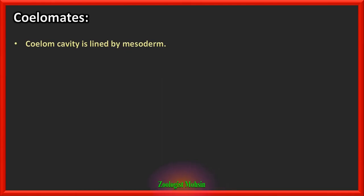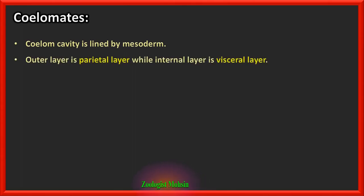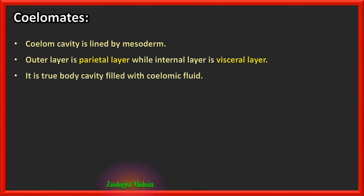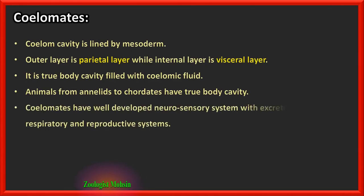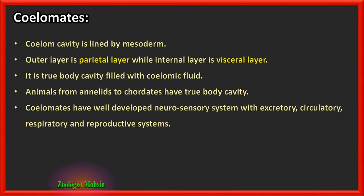Coelomates are organisms with a true body cavity — the coelom — which is lined by mesoderm. There are two layers of mesoderm: the outer parietal layer and the inner visceral layer. It is a true body cavity filled with coelomic fluid. Animals from annelids to chordates have a true body cavity. Coelomates have a well-developed neurosensory system along with excretory, circulatory, respiratory, and reproductive systems.